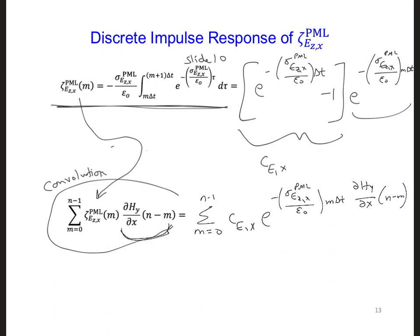During time stepping, we have to evaluate this expression every single time step and at every single grid cell within the PML, which means we have to store all the previous values of this expression, since we have a summation. All the previous values of this expression at every time step and at all the grid cells in the PML.